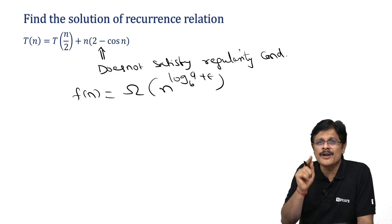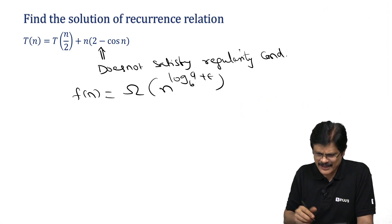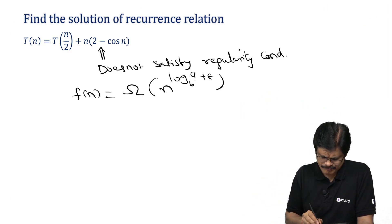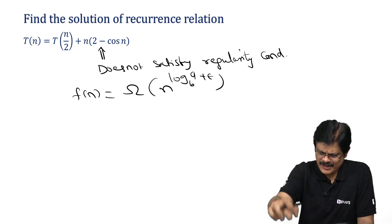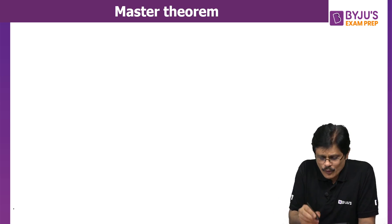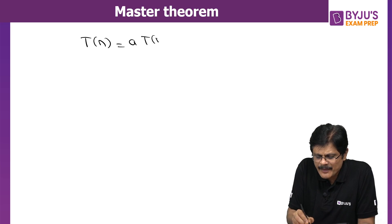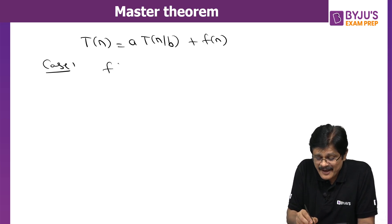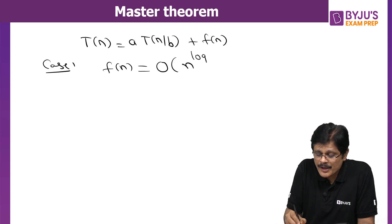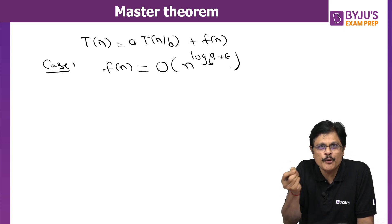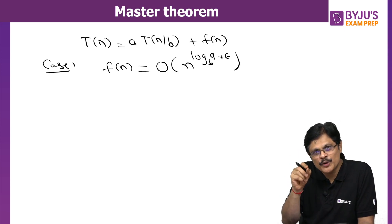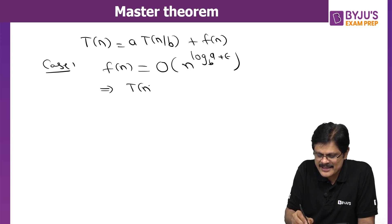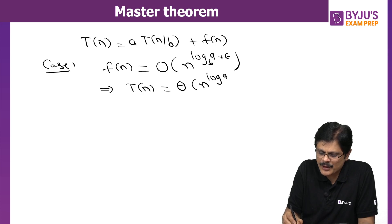Let me quickly recap. The recurrence relation is T(n) = A·T(n/B) + F(n). Case 1: if F(n) is O(n^(log_B A − ε)) — that is, even after adding a small positive constant to the exponent, n^(log_B A) still dominates F(n) — then T(n) is Θ(n^(log_B A)).